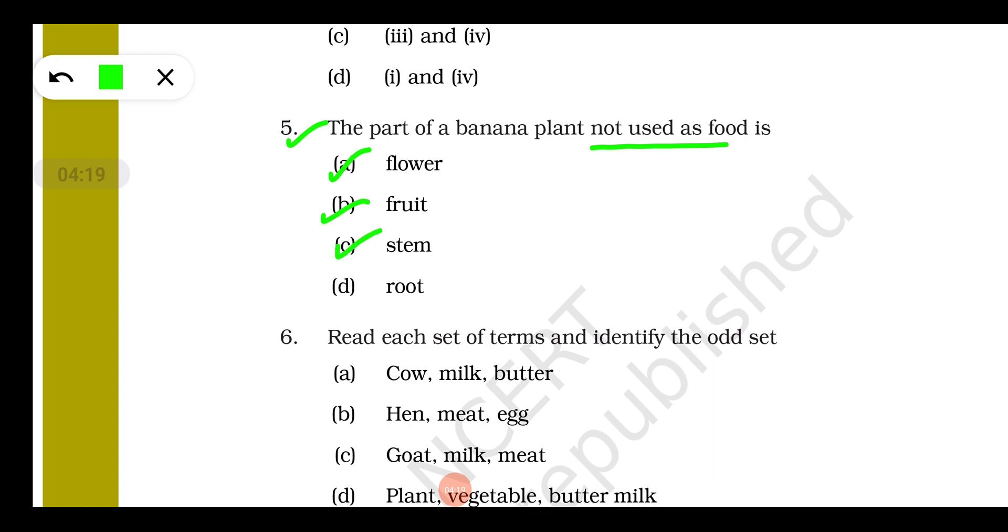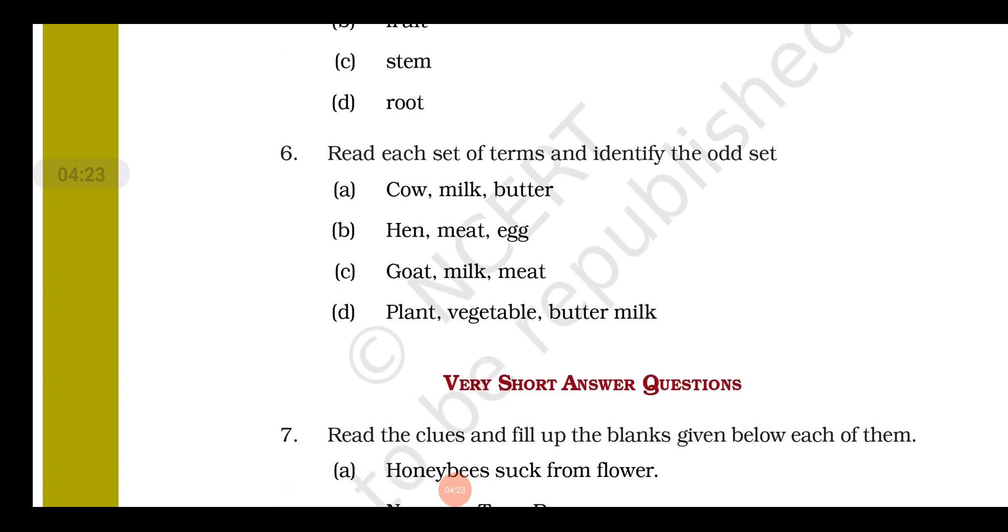Question number six: read each set of terms and identify the odd set. From milk, from cow we get milk and from milk butter is obtained. From hen we get meat and also egg. From goat we get milk as well as meat, so there is a relation. But option D says from plant we get vegetable and buttermilk. This is the odd one, so option D is the odd one.